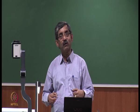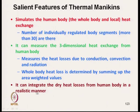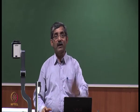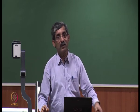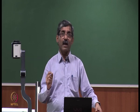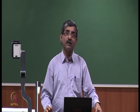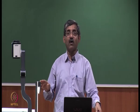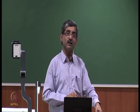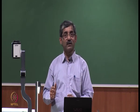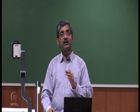Depending on area, we can measure the weighted average and calculate the whole body heat transmission. It can integrate the dry heat loss from the human body in a realistic manner. If we test heat loss in a guarded hot plate, we get a two-dimensional heat loss system which may not simulate the real condition. The values from guarded hot plate, tog meter, or any other method are mainly used for comparison purposes, but actual heat transmission can be obtained through the thermal manikin system.